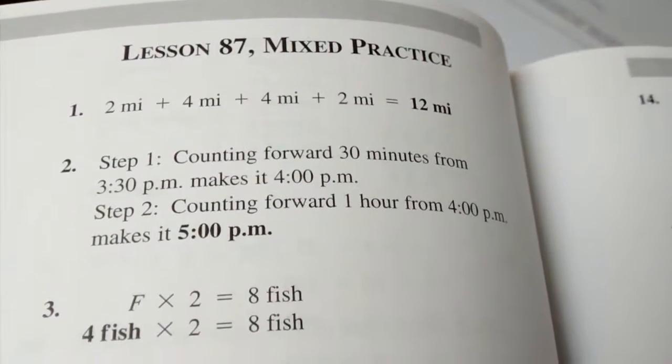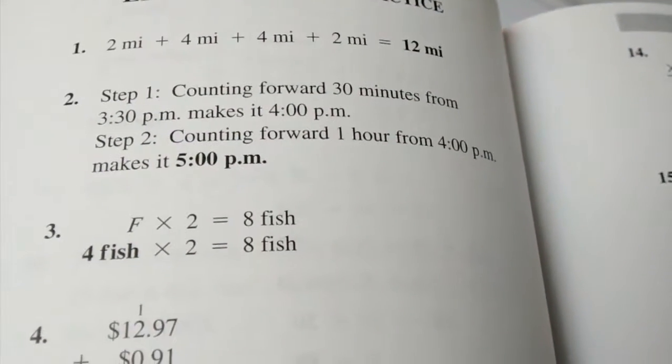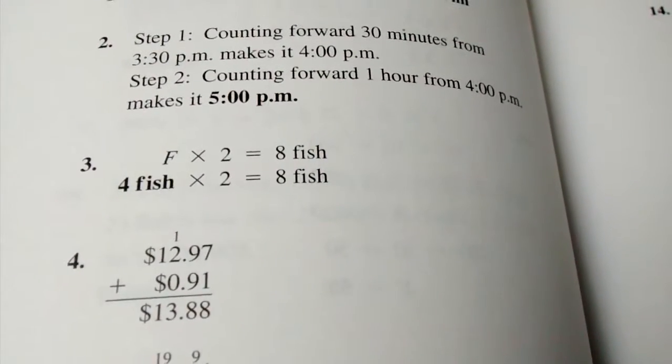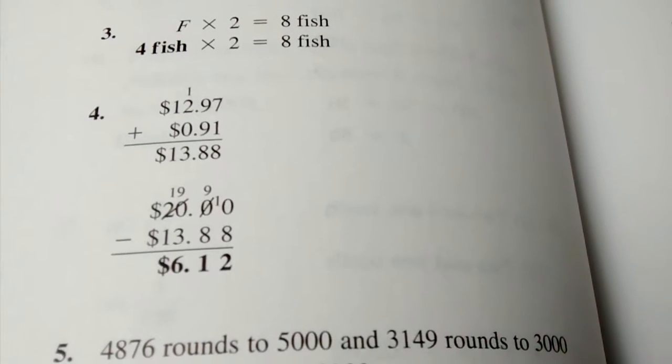Number 7. Number 1, 12 miles. Number 2, 5 o'clock p.m. Number 3, 4 fish. Number 4, $6.12.